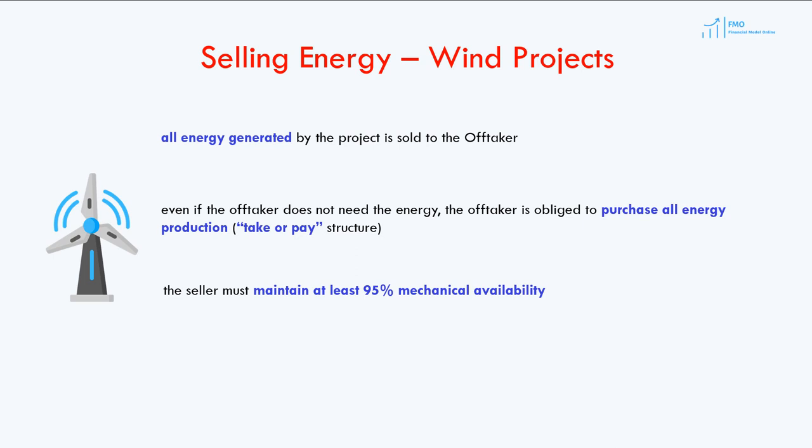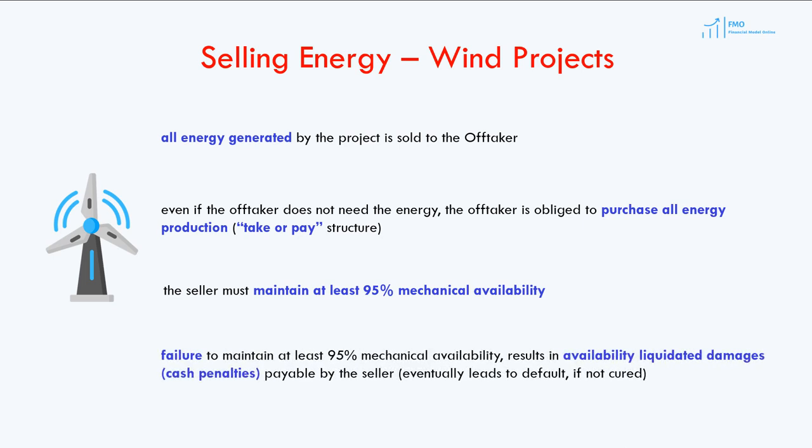The off-taker requires the wind farm to maintain a certain percentage of mechanical availability of the turbine, which is typically 95%. Failure to maintain required turbine availability results in liquidated damages, which are cash penalties payable to the off-taker. The PPA will include the formulas for how these liquidated damages are calculated. If the failure is not cured within a specified period, an event of default takes place and the off-taker can terminate the PPA.